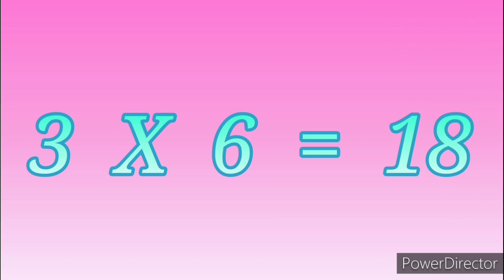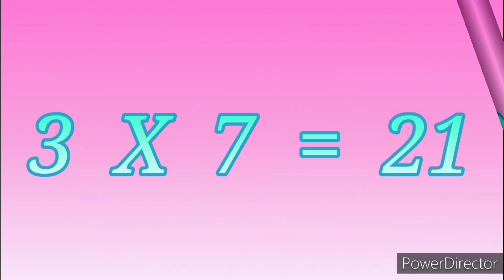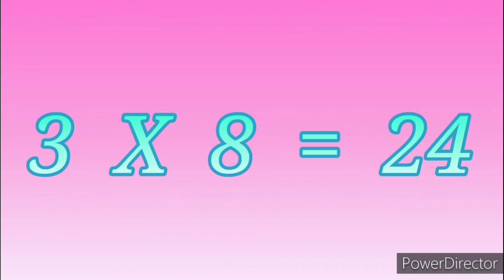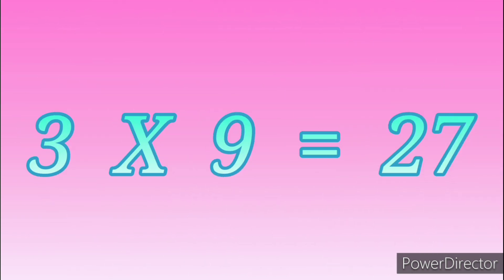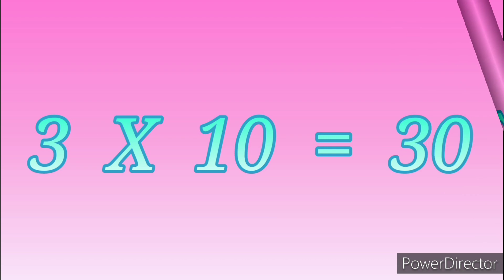3 sixes are 18. 3 sevens are 21. 3 eights are 24. 3 nines are 27. 3 tens are 30.